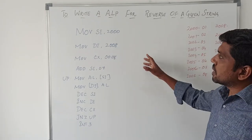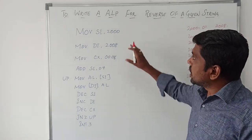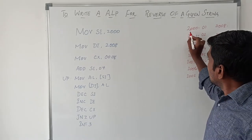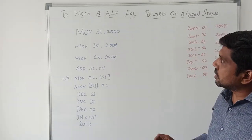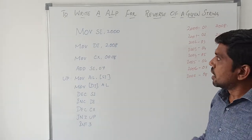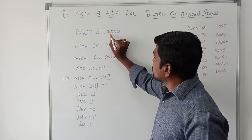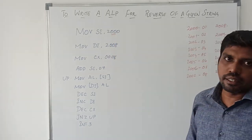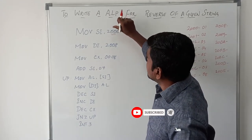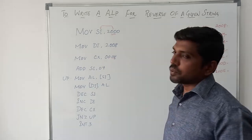Now I am going to explain the sequence of the program. The first instruction is MOV SI, 2000H. So initially, you pick the input memory location. The input memory location is 2000H. This memory location is transferred to the source index register. This 2000H is a 16-bit immediate data. So after execution of this instruction, this data is transferred to SI. This 2000 is transferred to SI.